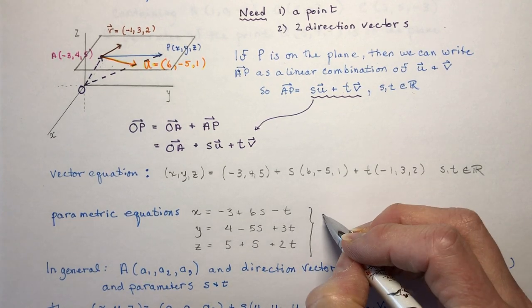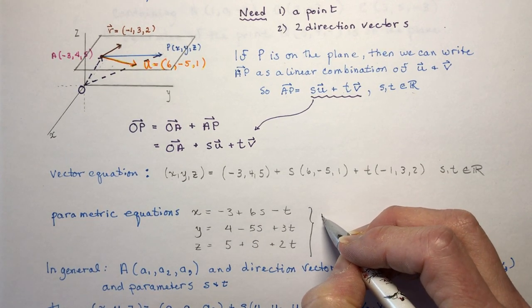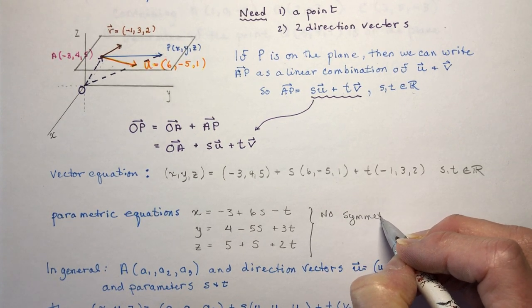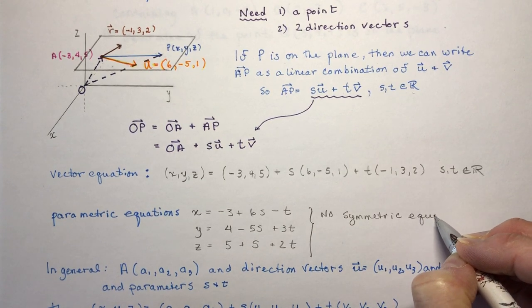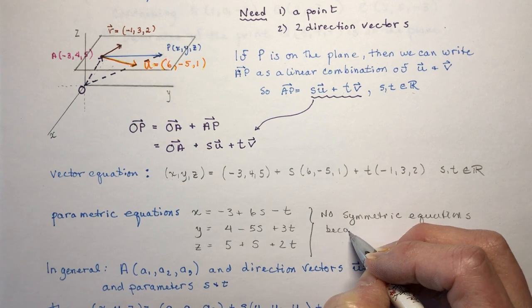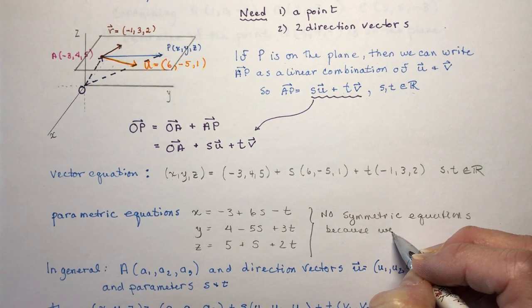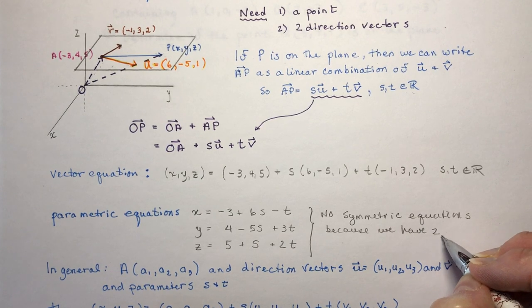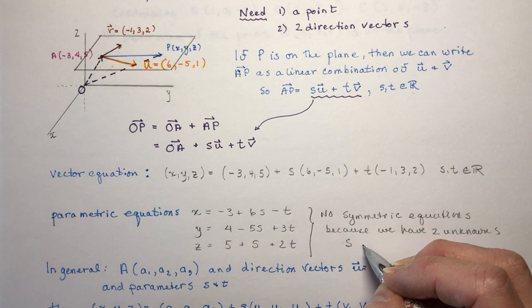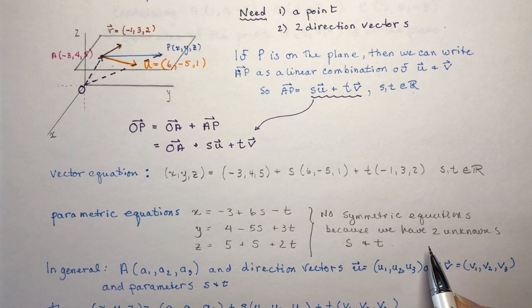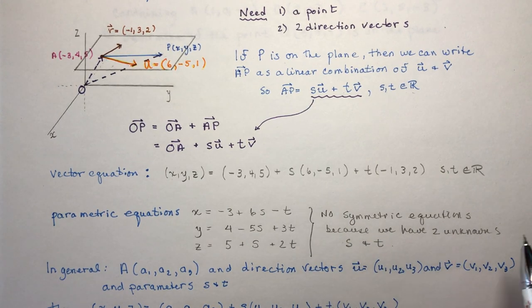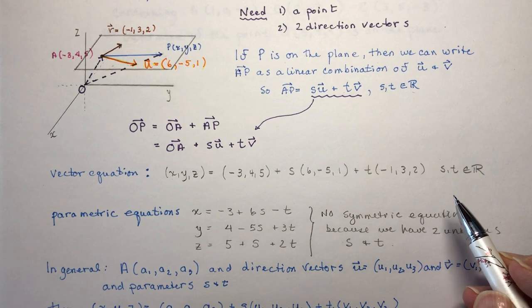What you should note is that there are no symmetric equations for planes - because we have two unknowns, parameters S and T. With lines we'd say T equals this, this, and this, so they're all equal. But we can't do that with planes because we have both S and T.